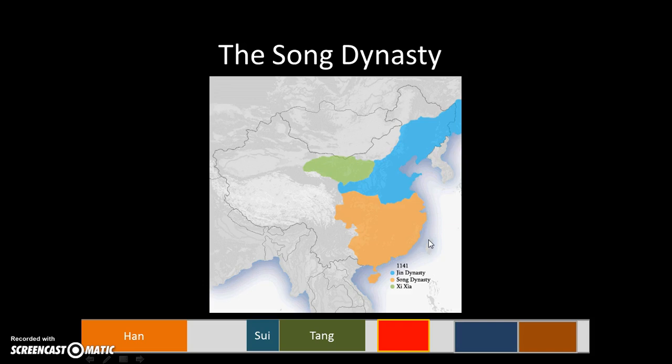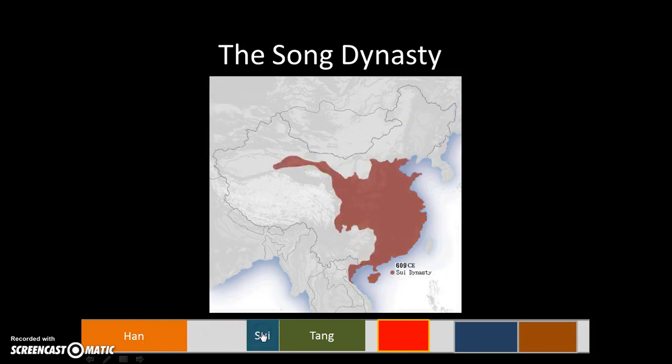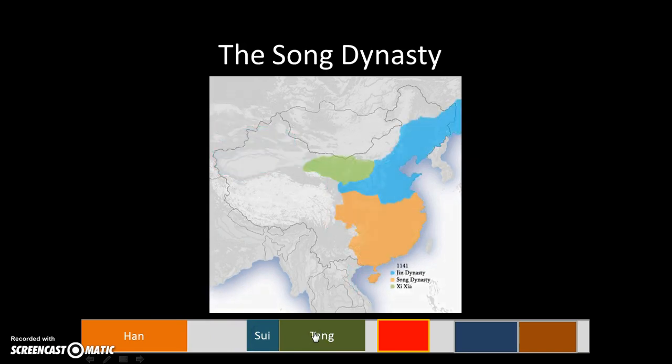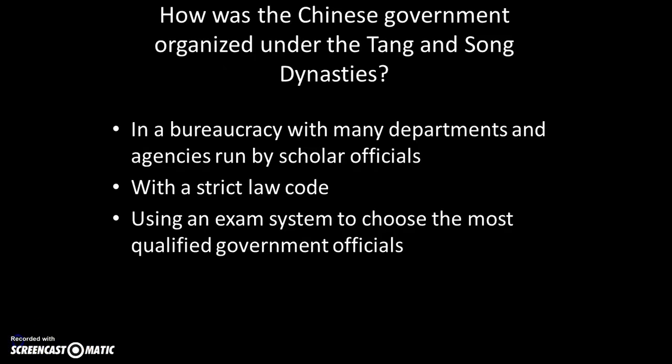Looking back in history, here's the Han, the Sui, the Tang, and here — the blinking red — is the Song Dynasty, so you can see how China has changed over time. Our objectives: explain how the Song Dynasty created a powerful imperial state, describe the agricultural and commercial booms that created a prosperous economy, and identify the arts and technologies that arose in Song China.